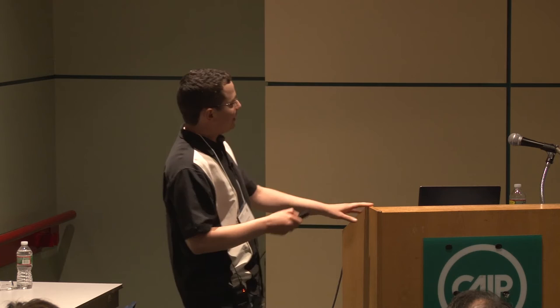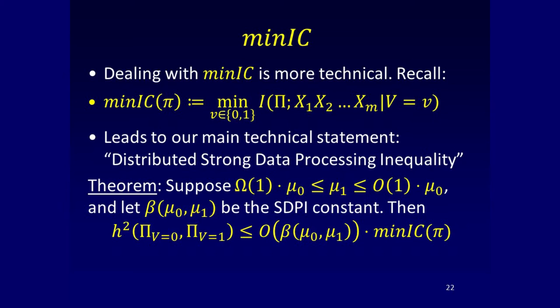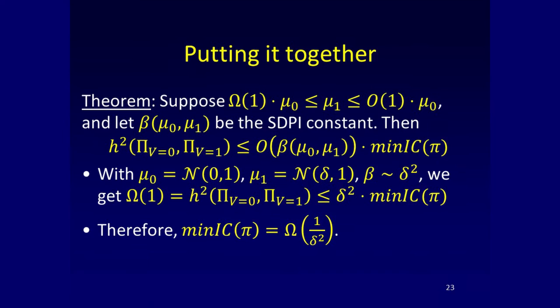Finally, this is the technical theorem that puts it all together. It bounds the mean information cost in terms of the Hellinger distance. The Hellinger distance can be lower bounded because the protocol must output different things — it's a constant. So beta, the strong data processing constant which is one over delta-squared, gives us what we need. We get the result and we are done — except I cheated again.